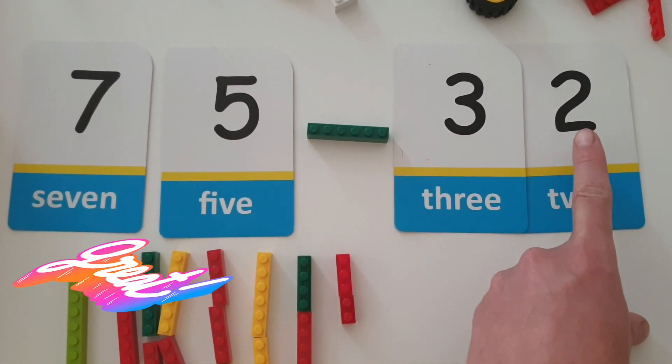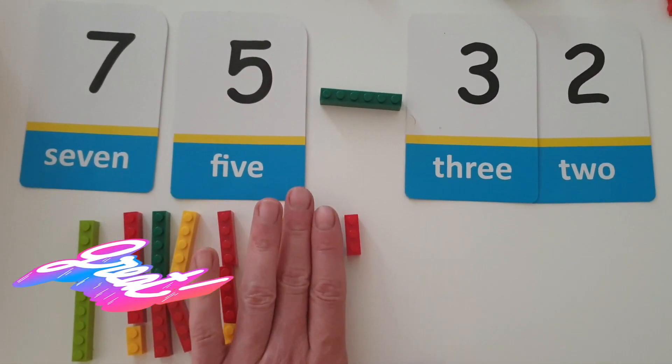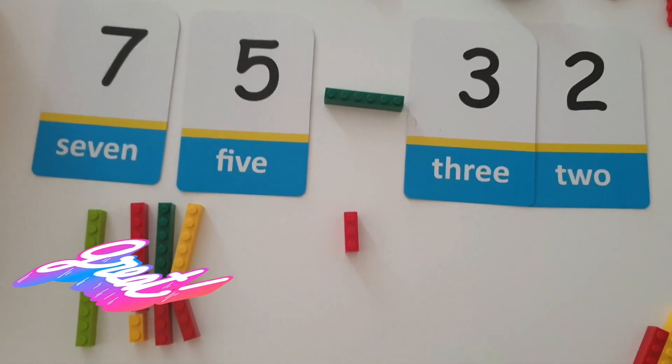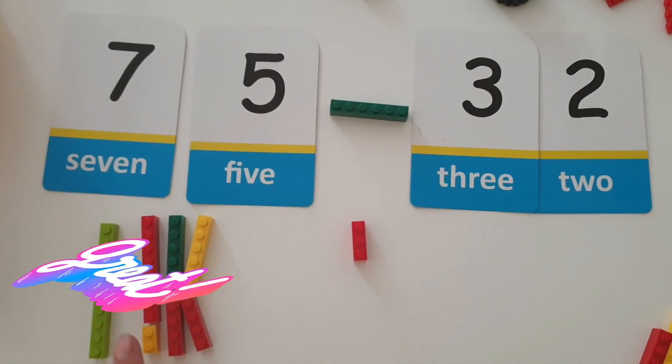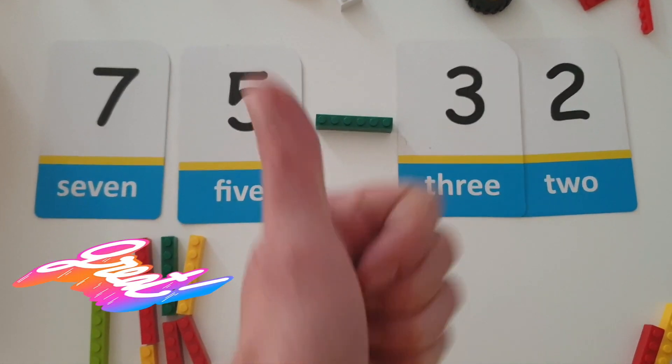So I'm going to start with my two ones, one, two, and now I'm going to subtract my three tens. Ten, twenty, thirty. What am I left with? Ten, twenty, thirty, forty, forty-one, forty-two, forty-three.